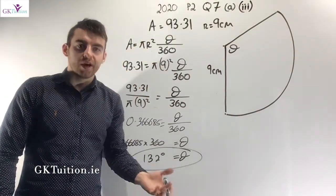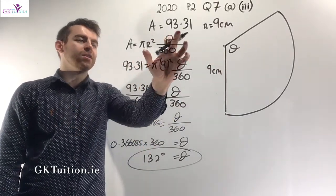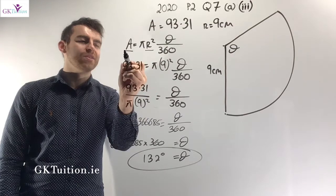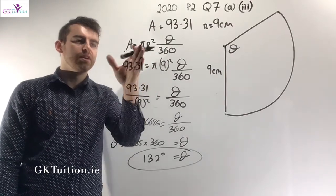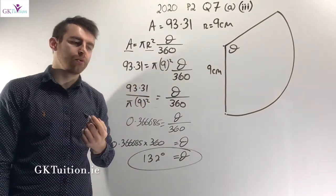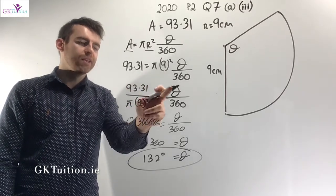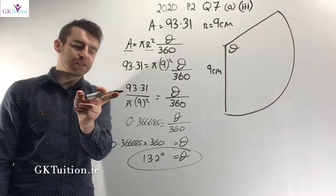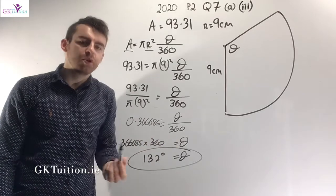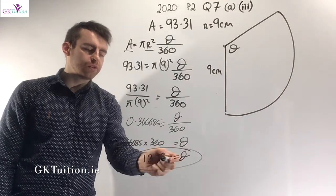I know the area already because it equals the curved surface area of the cone: 93.31 cm². The radius is 9, so subbing r = 9 and area = 93.31, the only unknown is θ. Dividing both sides by π and 9² gives θ/360 = 0.366685. Multiplying both sides by 360, θ works out as 132 degrees to the nearest degree.